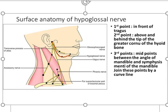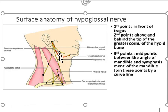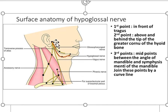Surface anatomy of the hypoglossal nerve. First point: in front of the tragus. Second point: above and behind the tip of the greater cornu of the hyoid bone. Third point: the midpoint between the angle of the mandible and symphysis menti. Join these points by a curved line. This is the surface anatomy of the hypoglossal nerve.